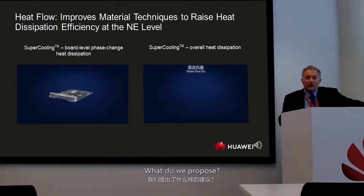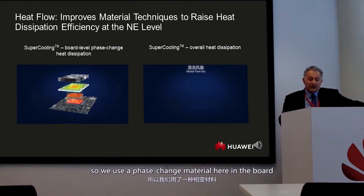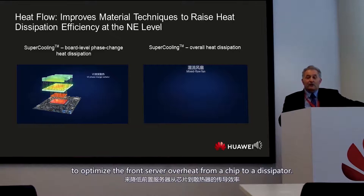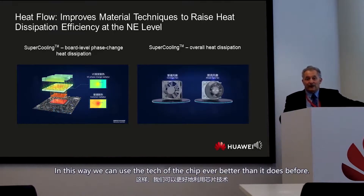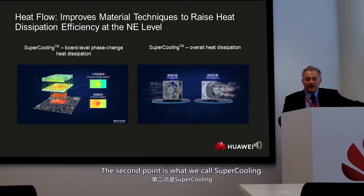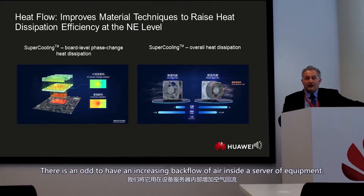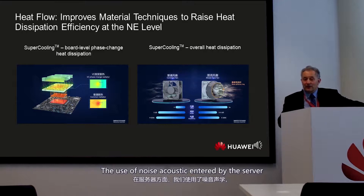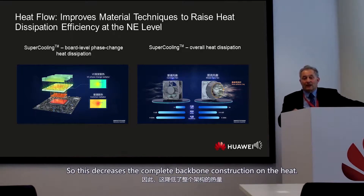On the heat side, we propose using new material techniques to raise heat dissipation. Phase change materials optimize heat transfer from chip to heatsink, reducing chip temperature. We also introduce supercooling fans that create balanced airflow, increasing airflow inside servers, reducing acoustic noise, and improving fan energy efficiency — all contributing to lower overall power consumption.